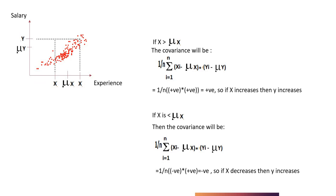Based on this covariance, we will be finding out the correlation coefficient, and based on this correlation coefficient we will be finding out the feature importance. I hope you are clear with the covariance concept, because it is very important to understand the correlation concept which we will be discussing in the next video. Until then, stay tuned and enjoy machine learning. Thank you so much.